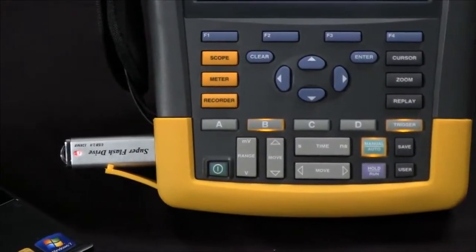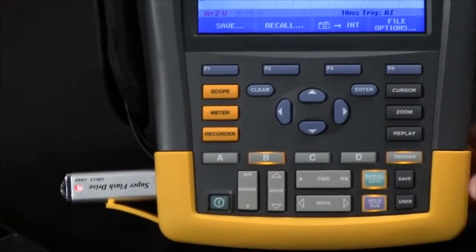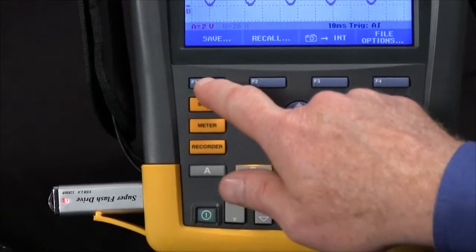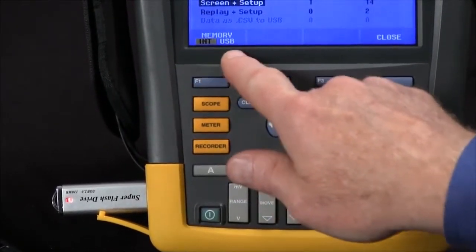Once the memory stick is installed, we simply hit the Save button, hit F1 for Save, and select F1 to change from internal memory to USB.